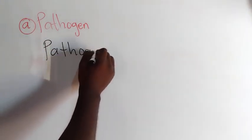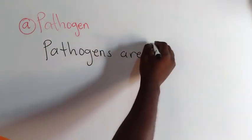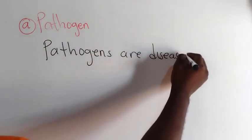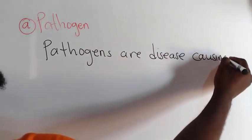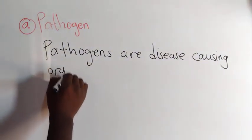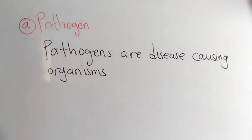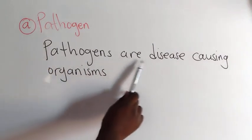So we can now answer question A. The question was: explain the meaning of the following terms. The first one was the pathogen. So what is a pathogen? Pathogens are organisms that cause a disease. Or you can say pathogens are disease-causing organisms.